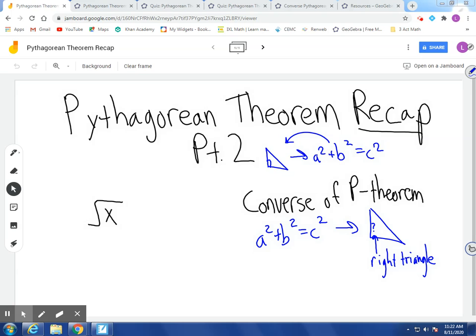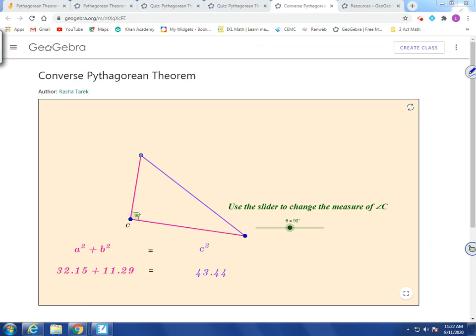And so just to show you this, I have another little resource here from GeoGebra. Right here, we have a program that was, or this app that was programmed to take the length of this, square it. In this case, it's 32.15.